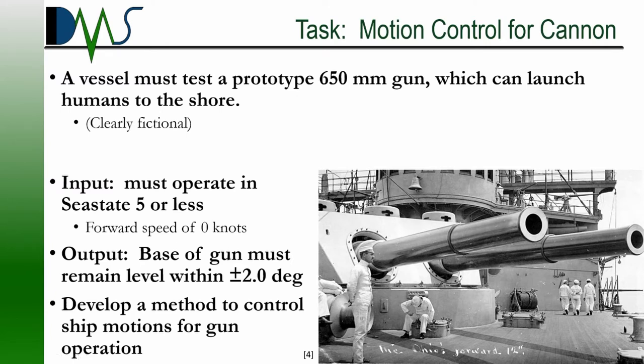The output from your seakeeping analysis is not going to be a definite yes or no answer. Remember, everything is based on statistics and probabilities. The output would say that you have a 5% chance of exceeding the limits of plus or minus two degrees. That's where seakeeping analysis turns into what's called an uptime analysis — rather than probability, we look at all the sea conditions in an area and say that for this ocean, you would be able to operate the gun for 360 days out of the year.